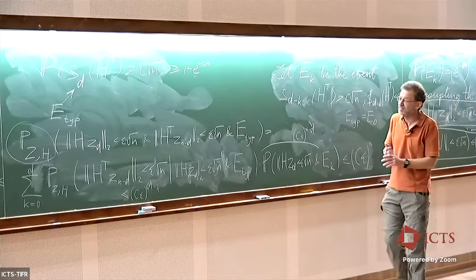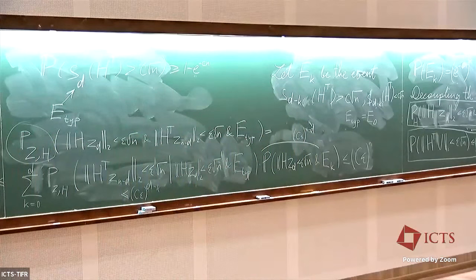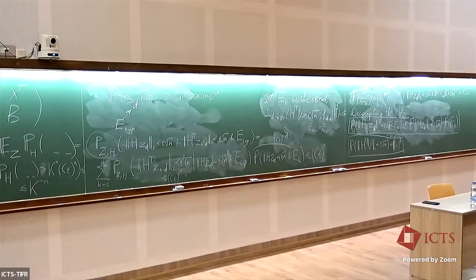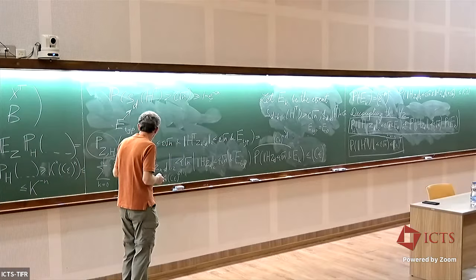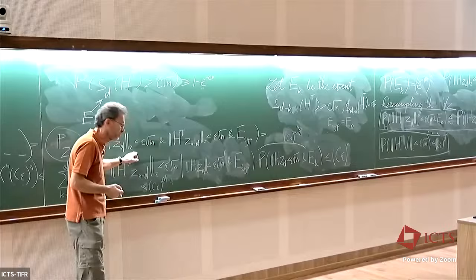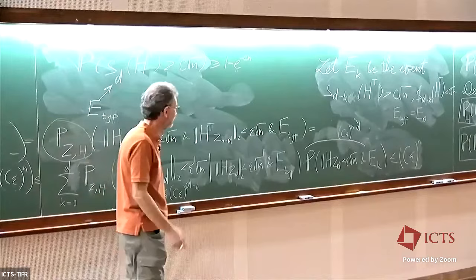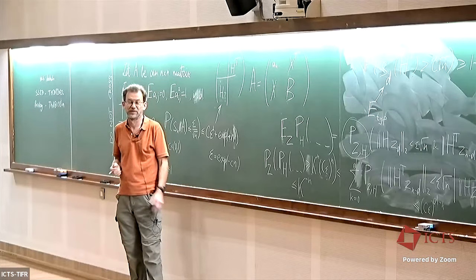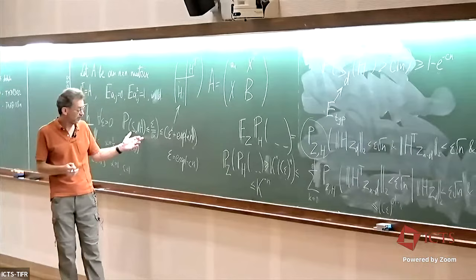The main idea of this proof was to use the small ball probability technique for H with a fixed vector Z_D for one factor, and to fix H and use the randomness with respect to Z for another factor. This combined approach yields the exponential bound. Since I have one minute left, I'm not going to embark on proving the alpha improvement. Thank you very much.